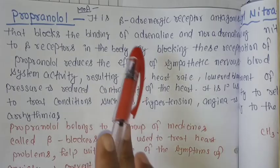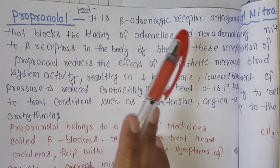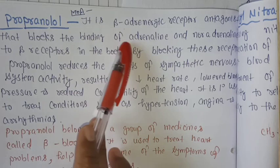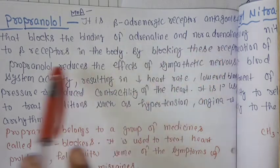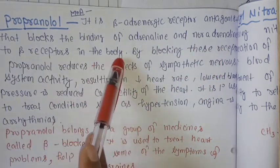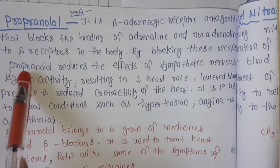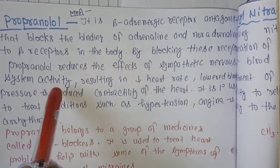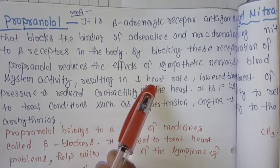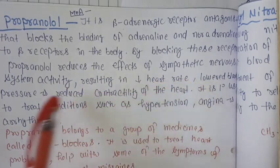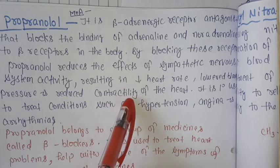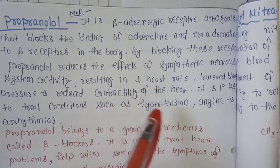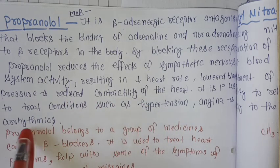Propranolol is a beta-adrenergic receptor antagonist that blocks the binding of adrenaline and noradrenaline to beta-receptors in the body. By blocking these receptors, propranolol reduces the effects of the sympathetic nervous system, resulting in decreased heart rate, lowered blood pressure, and reduced contractility of the heart. It is primarily used to treat conditions such as hypertension, angina, and arrhythmias.